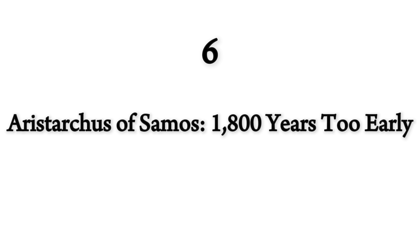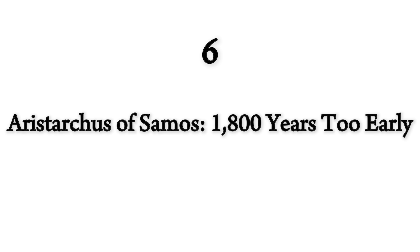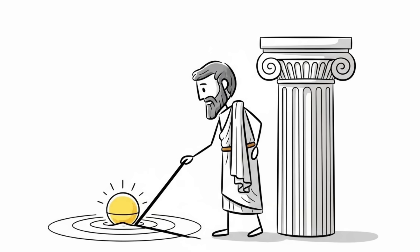6. Aristarchus of Samos, 1,800 years too early. Most people think Copernicus invented the idea that Earth orbits the Sun. But it was actually Aristarchus who figured it out in 270 BC.